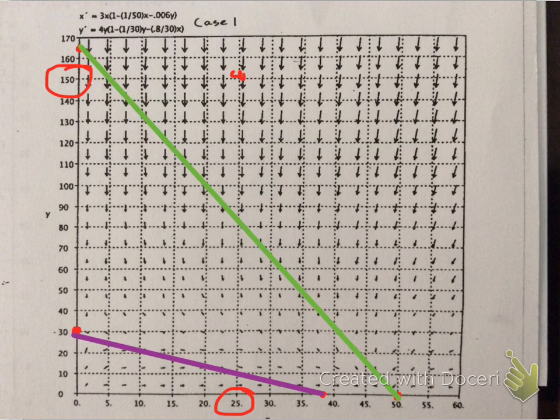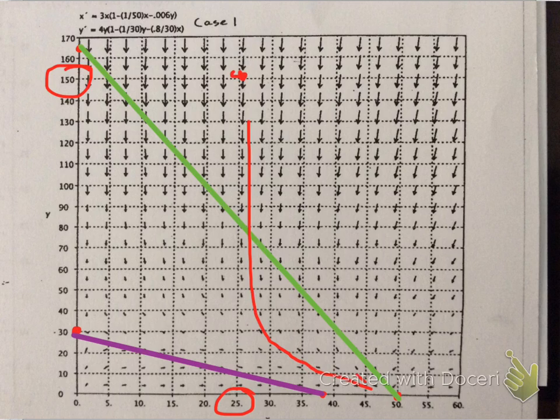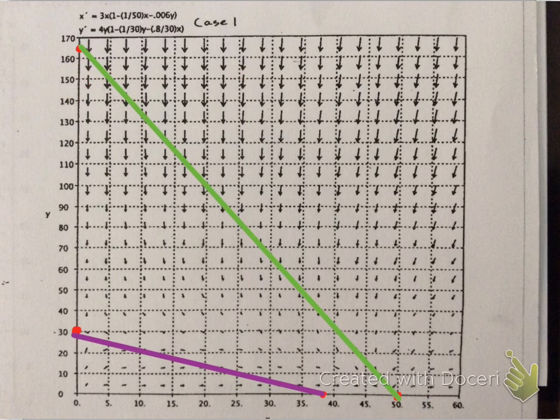Those represent the number of population of those species at that certain time. So if we start with 150 of species one and 25 of species two, or vice versa, whatever, the trend of those two populations is going to eventually go to here.